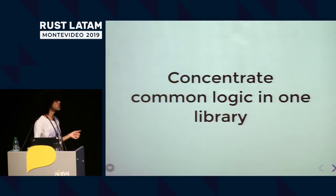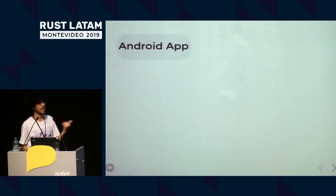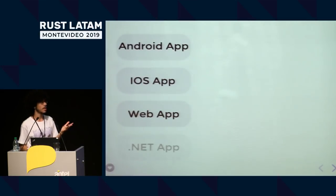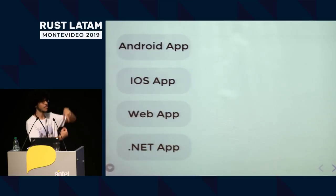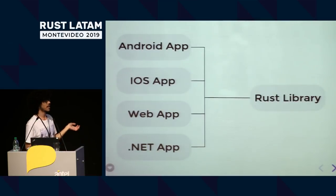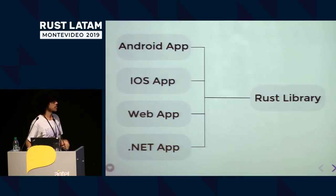You can also use FFI to concentrate common logic in one library. At my company, PagarMe — a payments company in Brazil — we have an Android app, an iOS app, a web app, and a .NET app that all need to talk to the payment terminal. That thing you put your credit card in and lose money, you know. We have a C library that builds the commands for that payment terminal. We're rewriting it in Rust, and you can basically concentrate this common logic in one library and consume it in various places.